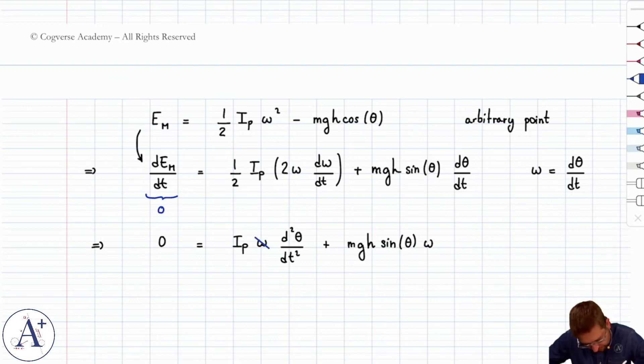Okay, so the omegas go away and if we put this in standard form, we almost get the differential equation that we're looking for. So, we get d2 theta dt squared plus mg h over ip sine of theta.